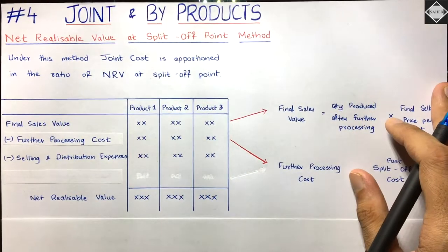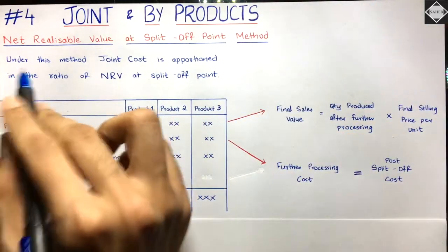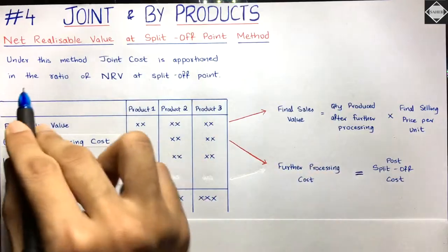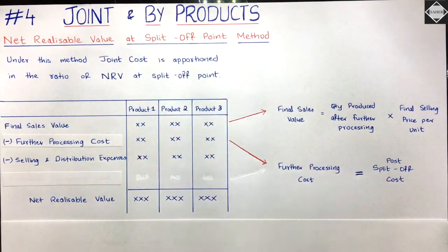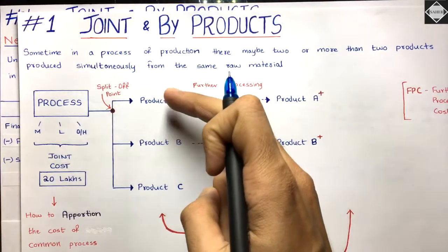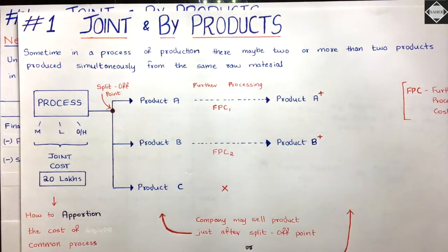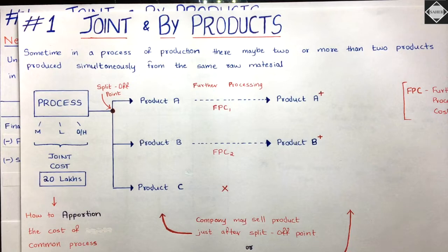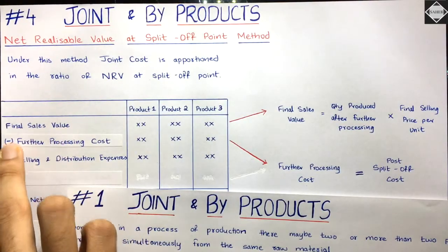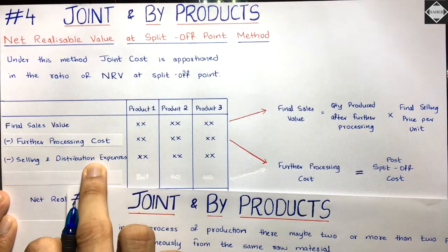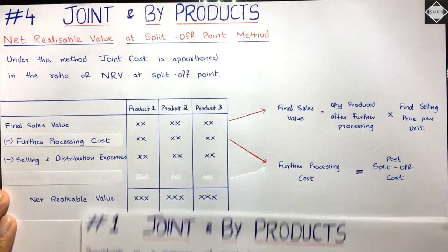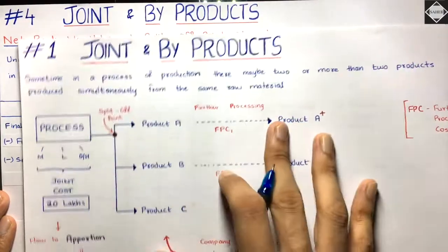What does the NRV at Split-off Point method say? Under this method, joint cost is apportioned in the ratio of net realizable value at the split-off point. You calculate the NRV of each product, take out the ratio, and distribute the joint cost in that ratio. The formula is: Final Sales Value minus further processing cost minus selling and distribution expenses equals Net Realizable Value.